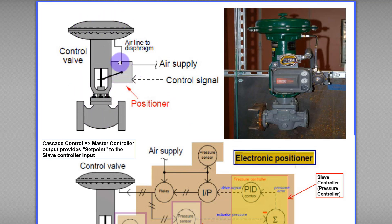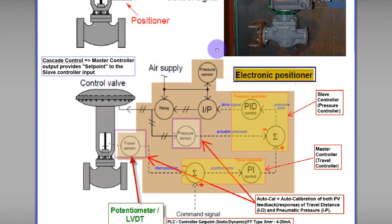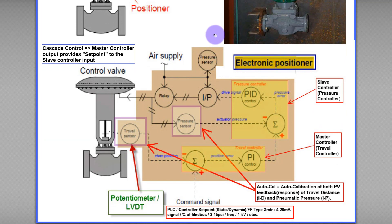This picture shows the positioner attached to the control valve. There is a travel linkage here that will feed back the travel opening, position, or travel distance back to the positioner.